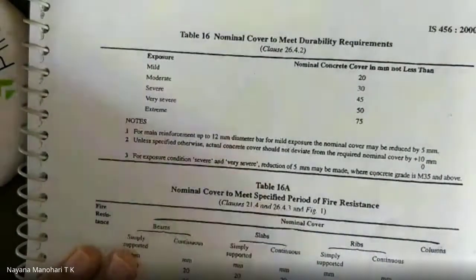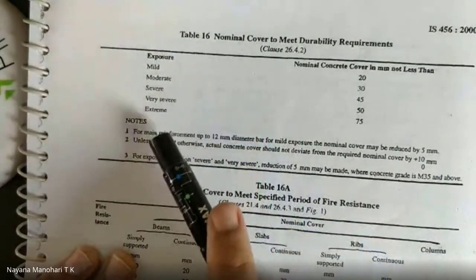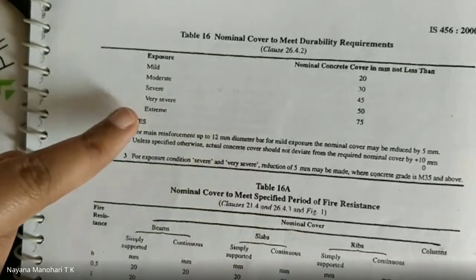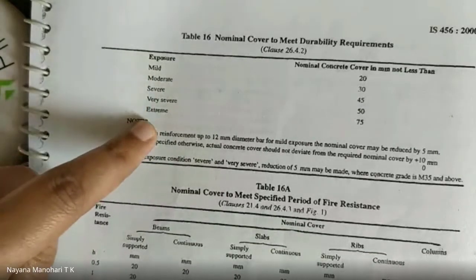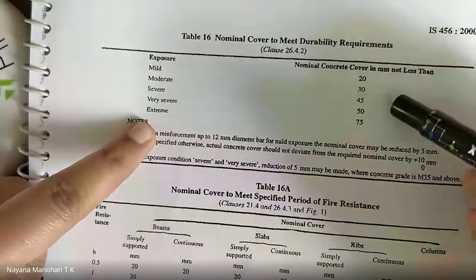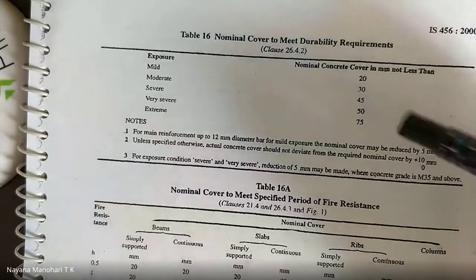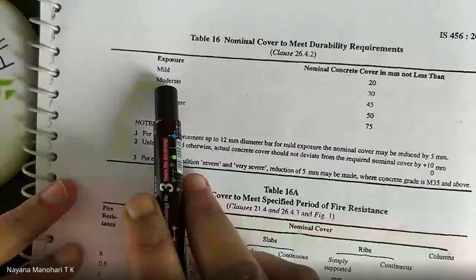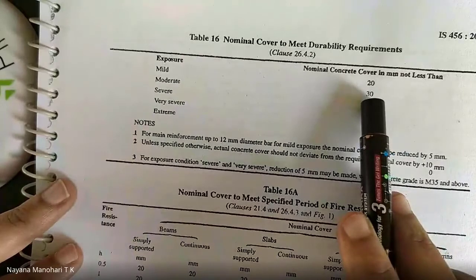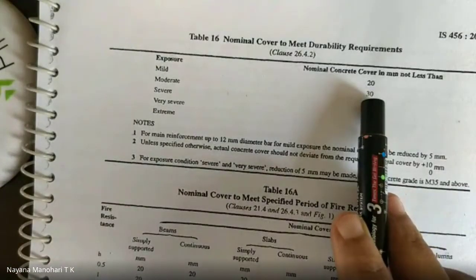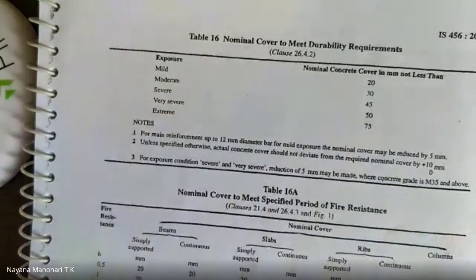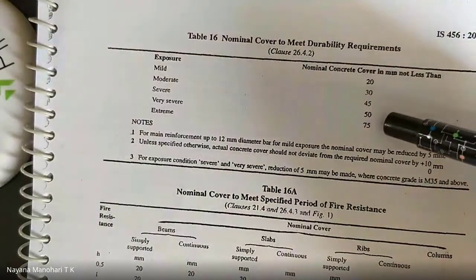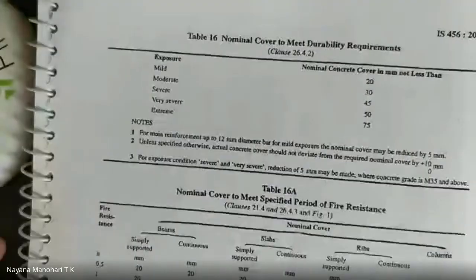In Table 16, page 47, exposure conditions listed are: mild, moderate, severe, very severe, and extreme. For each exposure condition, the nominal cover is specified in mm — the cover should not be less than that value. In this problem, the specified exposure condition is moderate, for which the nominal cover is 30 mm.